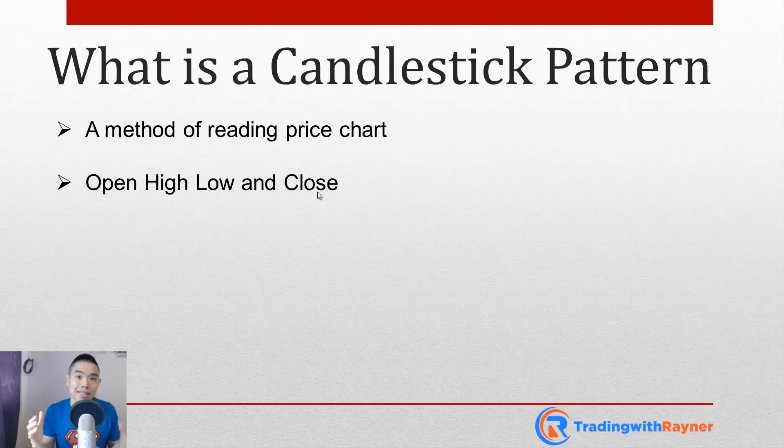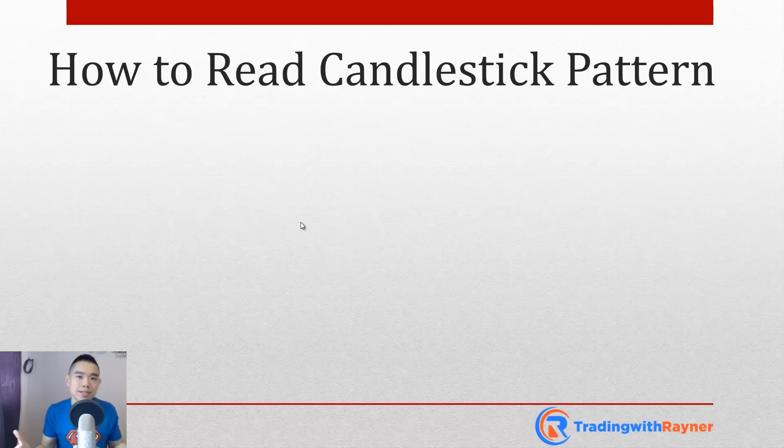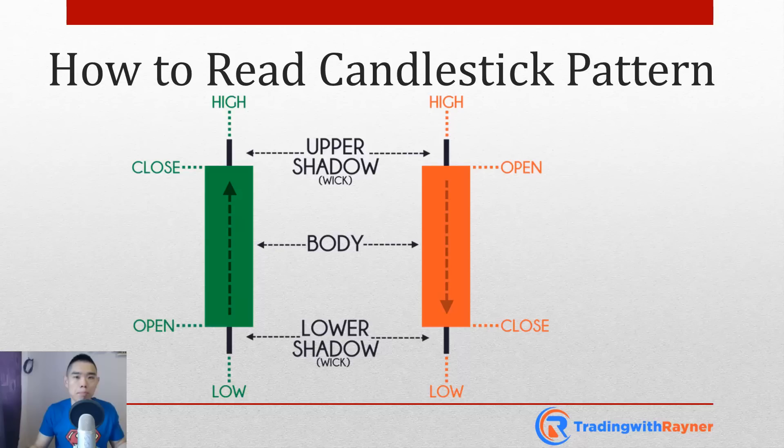How do you read a candlestick chart? Remember there are only four things: the open, the high, the low, and the close. The candles are typically two colors — either green and red, or black and white. The most common colors are green and red.